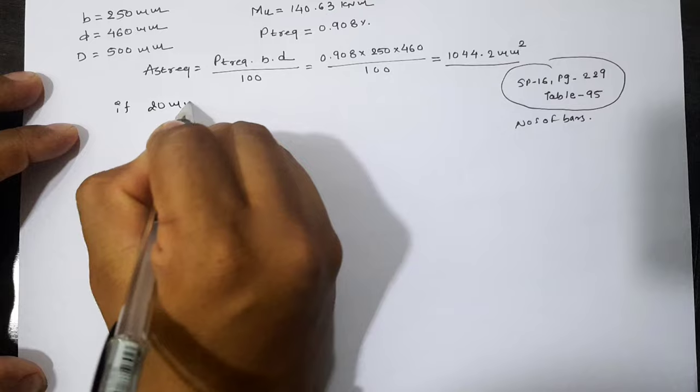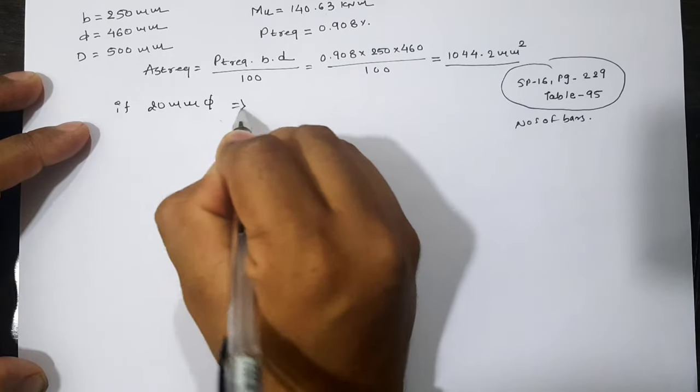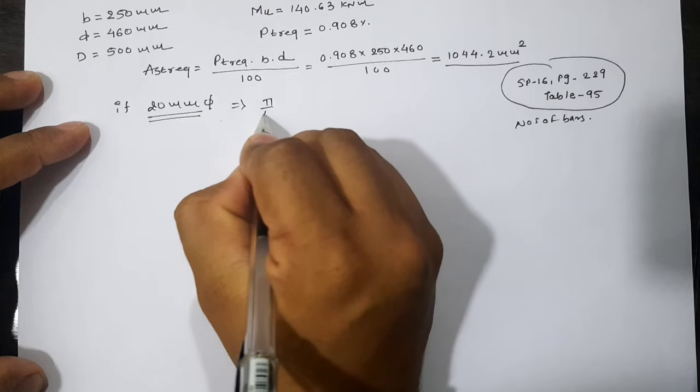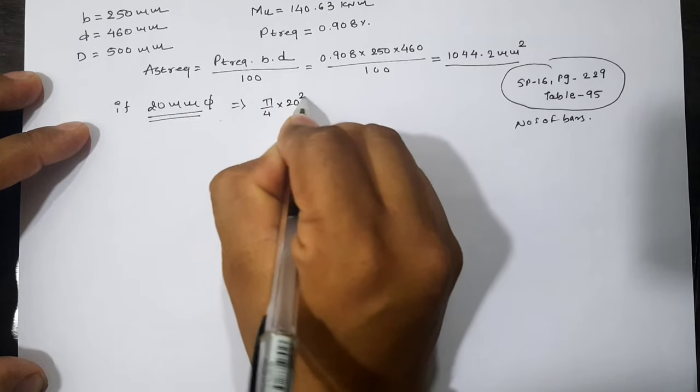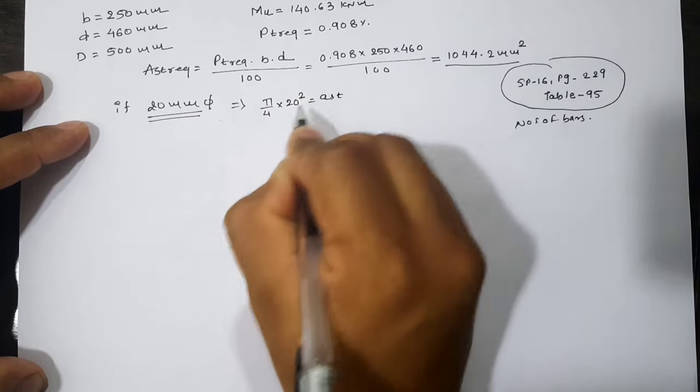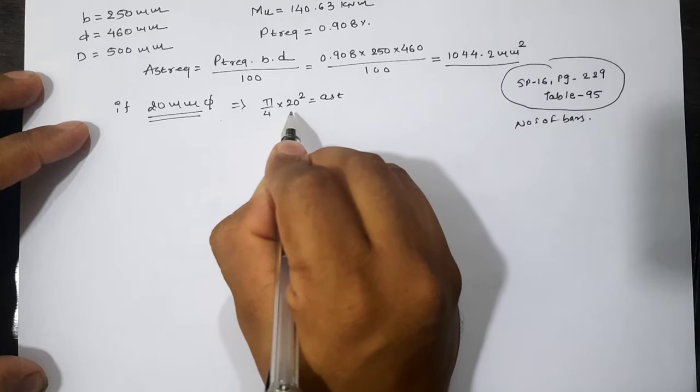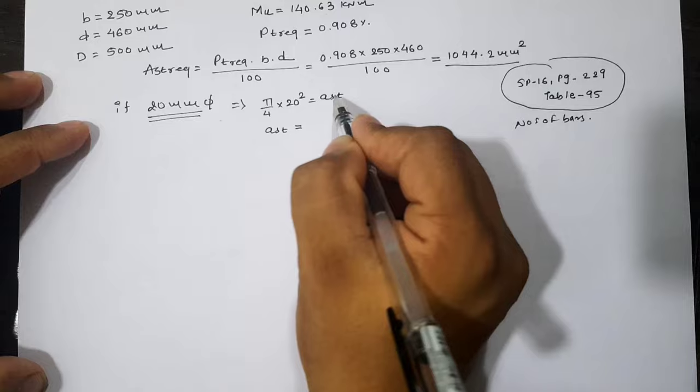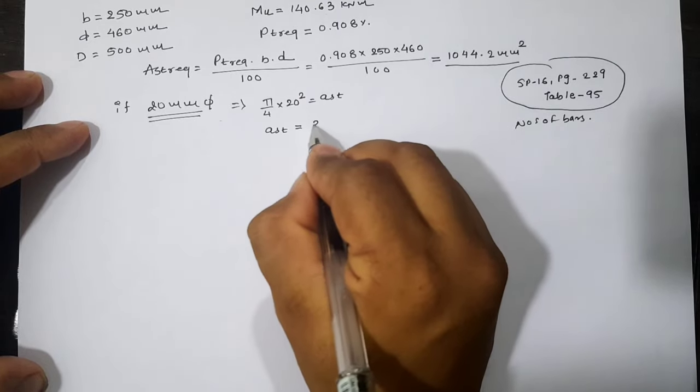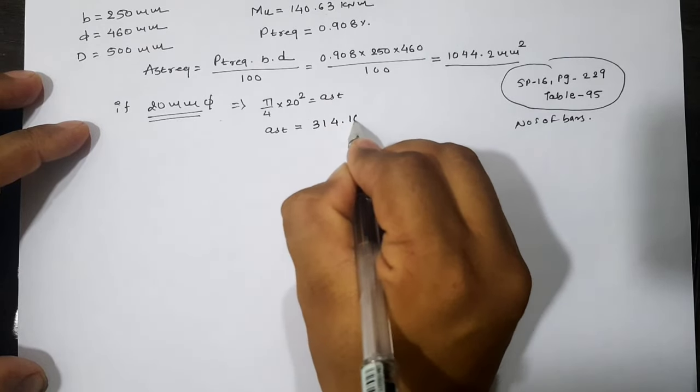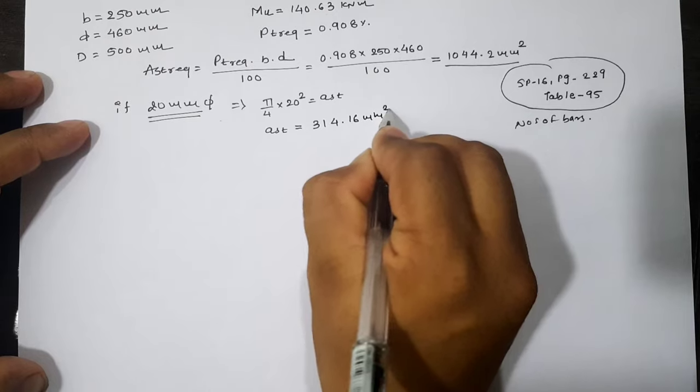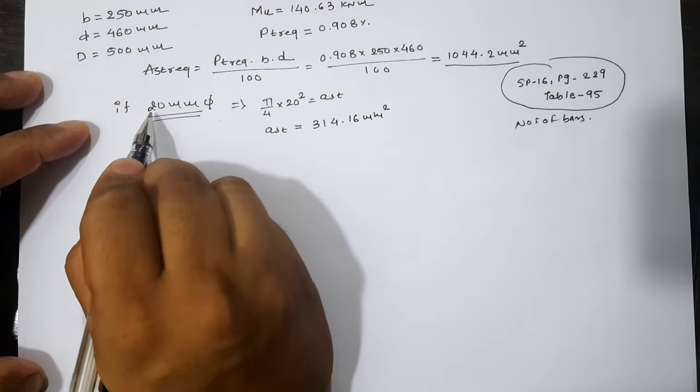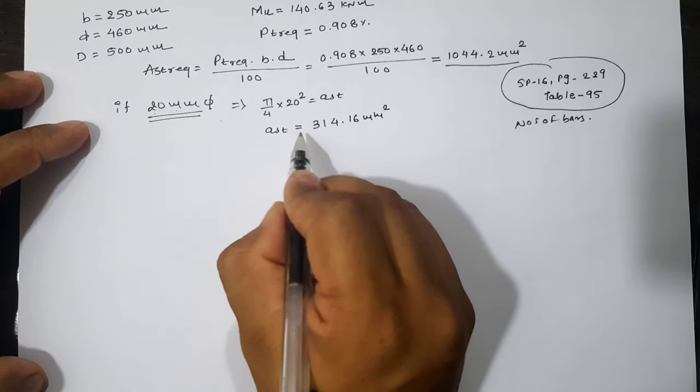Let us calculate by equation. If 20 mm diameter bar is assumed, then the area of one 20 mm bar is π/4 times 20², which equals 314.16 mm².